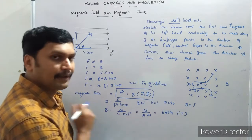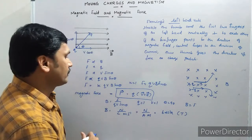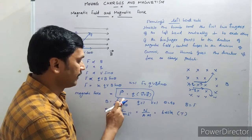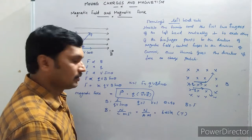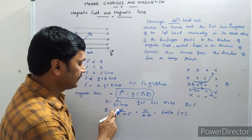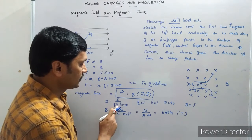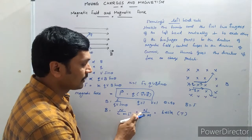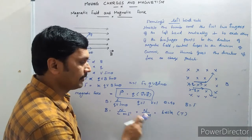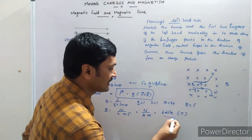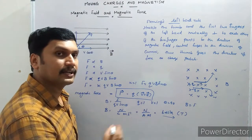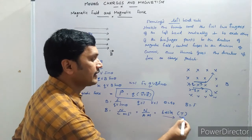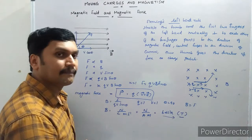Now, what is the SI unit of magnetic field? From the expression B = F / (QV sine theta), the unit of force is Newton, unit of charge is Coulomb, and unit of velocity is meter per second. Coulomb per second can be written as Ampere, so the unit of B is Newton per Ampere-meter. This unit is known as Tesla, named to honor the great scientist Nikola Tesla.